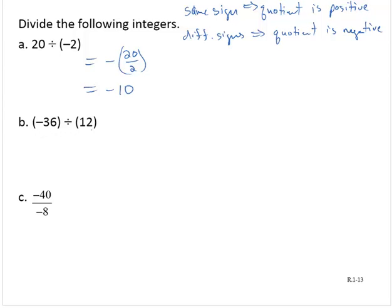Negative 36 divided by 12. Different signs, so I would think negative. And 36 over 12, 36 divided by 12 is 3, so therefore, negative 3.